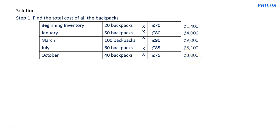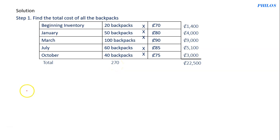Then 40 times 75 gives 3,000. After getting all this, we find the total. When you add everything together — 1,400 plus 4,000 plus 9,000 plus 5,100 plus 3,000 — you get 22,500. So the total cost is 22,500. You can also find the total packs which gives you 270.